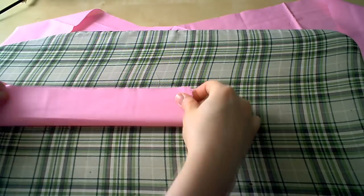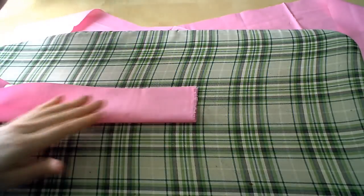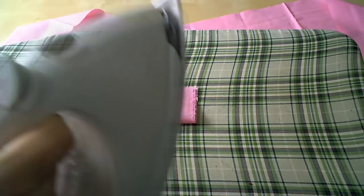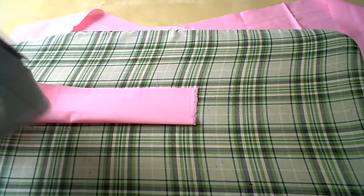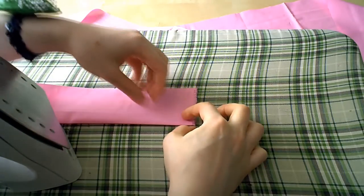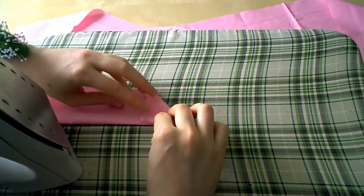Now I like the ends of my apron strings to be mitered points. So, take one end to your waistband, fold it in half right sides together, and give it a little press with the iron. Fold down the corner at a 45 degree angle, and then give a press again.